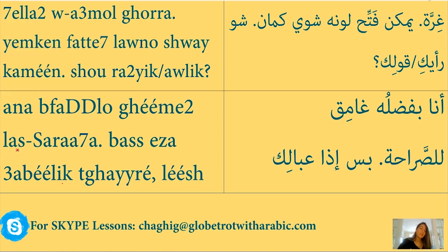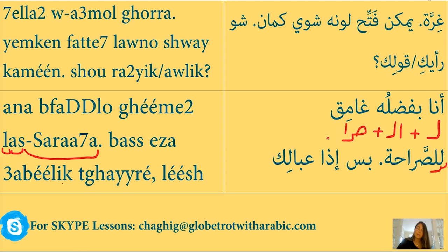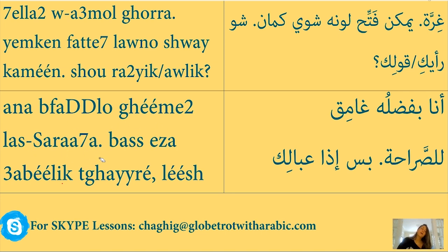'La-ssara7a' — sara7a means honesty. La-ssara7a literally means 'for the honesty,' which in Arabic is how you say 'honestly.' If we break it down: la means for, plus al (the), plus sara7a (honesty). You notice in Arabic the way to say honestly is 'for the honesty.' So 'ana bfaddel ghayim, la-ssara7a' means I prefer it dark, honestly. You can also move la-ssara7a to the beginning of the sentence: 'la-ssara7a, ana bfaddel ghayim.'